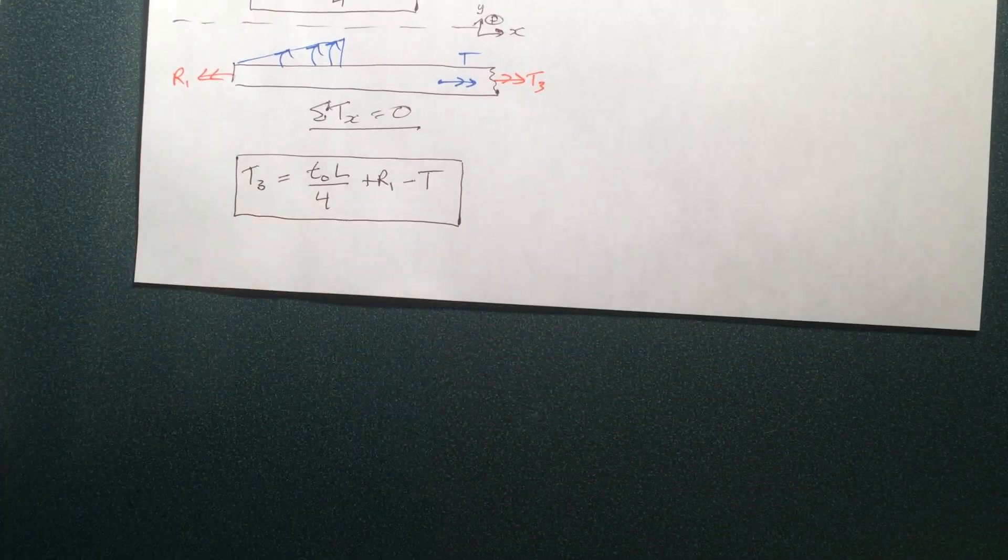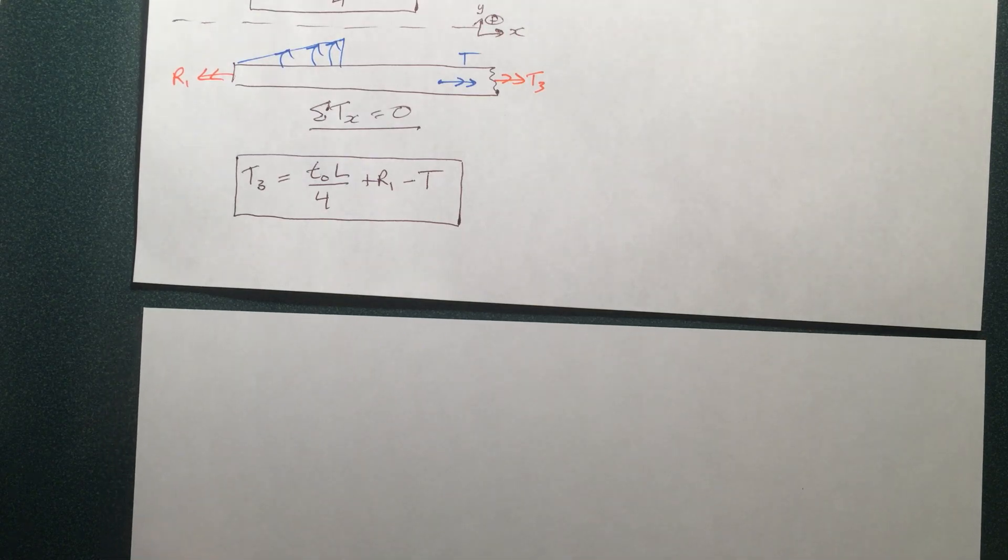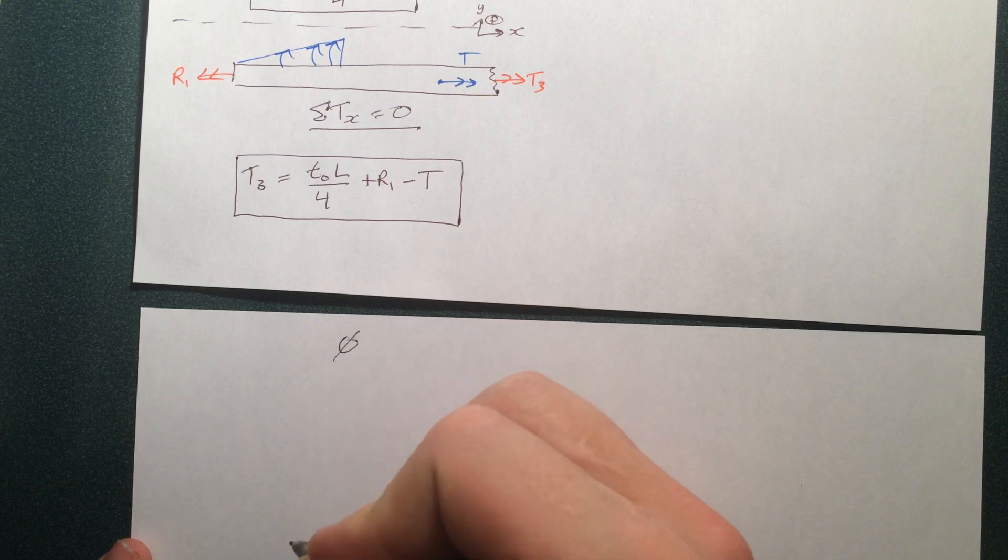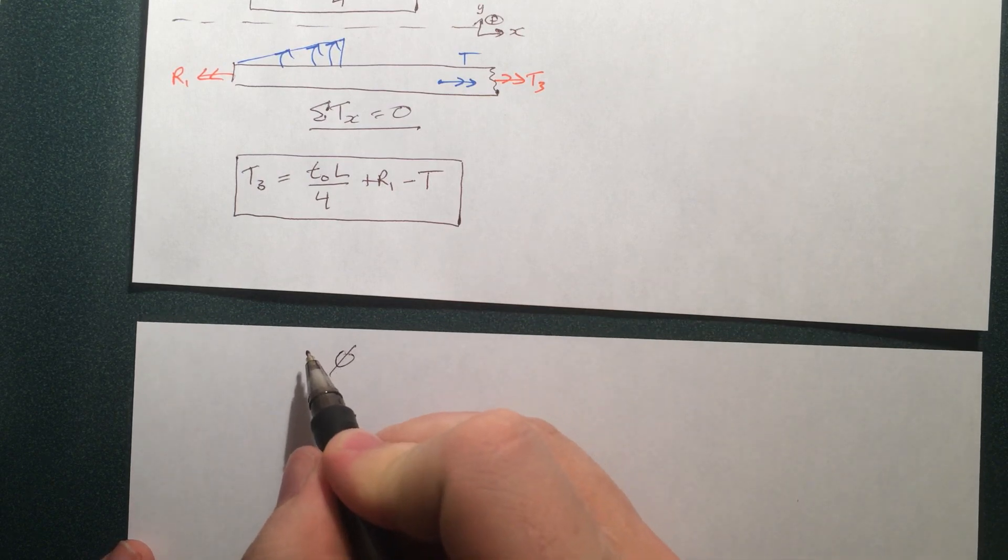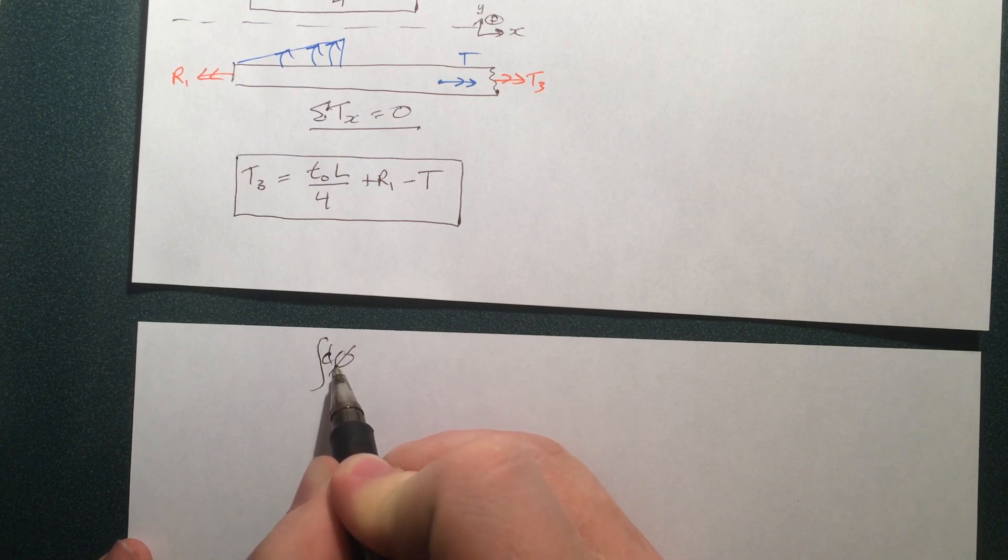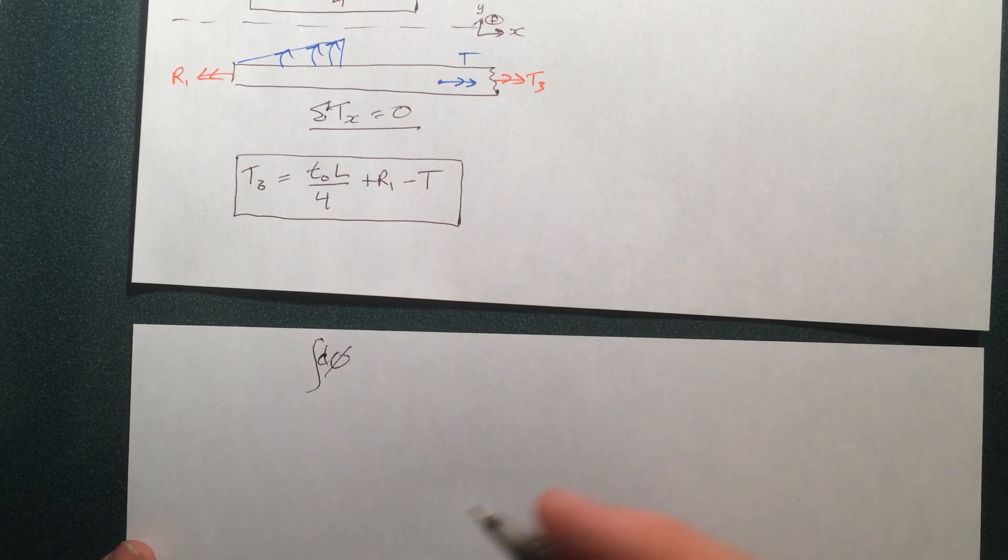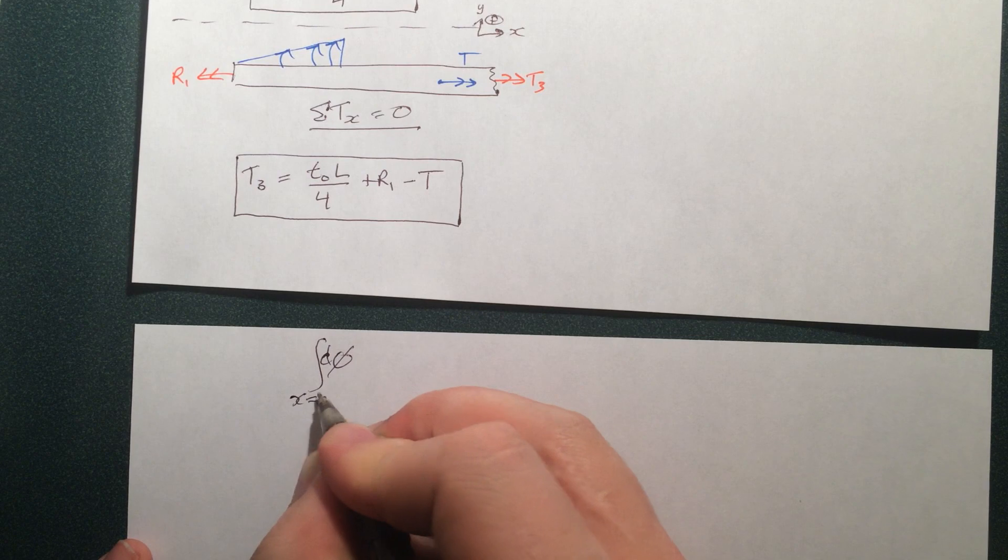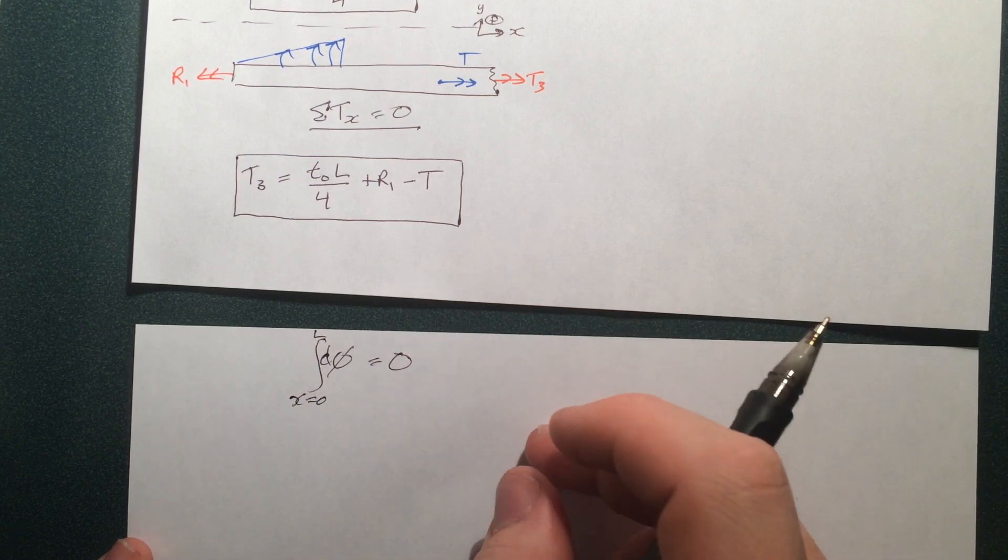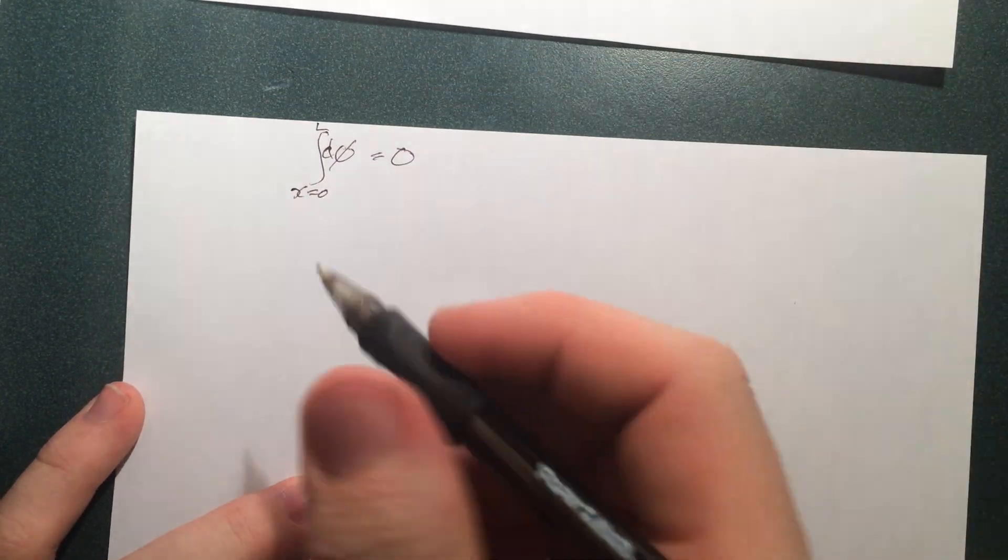So the way we find R1 is by going to a compatibility condition, and since it's statically indeterminate, we're going to rely on displacement, or twist. More specifically, we can say the sum of the twist. So all the twists. So we'll take the twist at any certain point, and add it to the twist at the next point. You add up all the twists from x equals 0 to L. So from one length of the bar to the other, it's going to be 0, because of course, each end is fixed, so there can't be any displacement at either end.